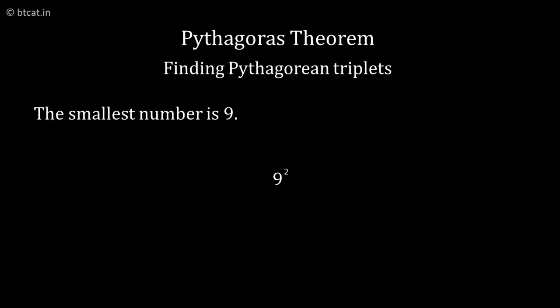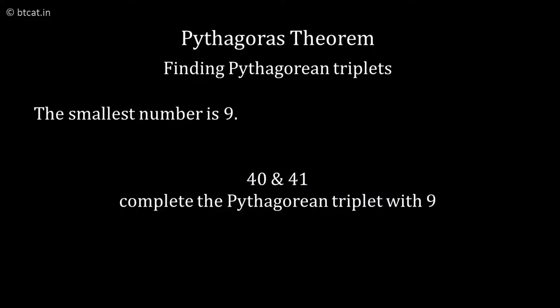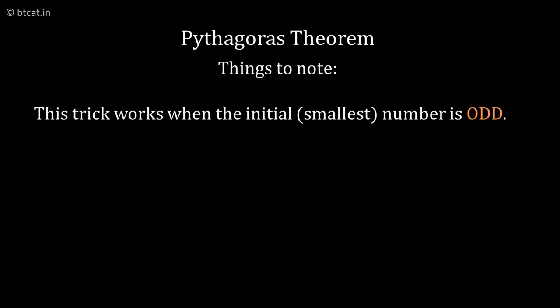Let us take the number 9. 9² is 81. 81 ÷ 2 = 40.5. We take the numbers as 40 and 41. So 9, 40, 41, you can check, is a triplet. This is an amazing trick, but my dear friends, this is for odd numbers when the starting number is odd, like 5, 9, and so on.